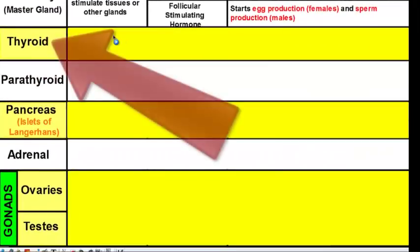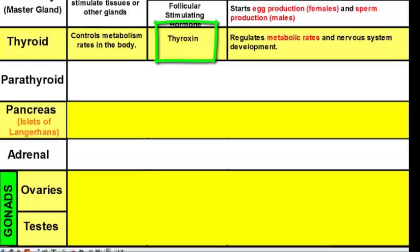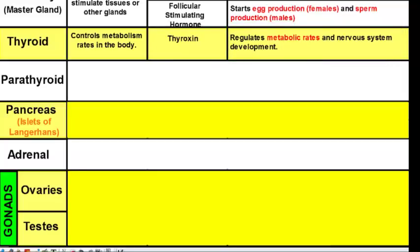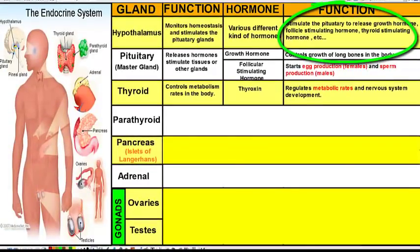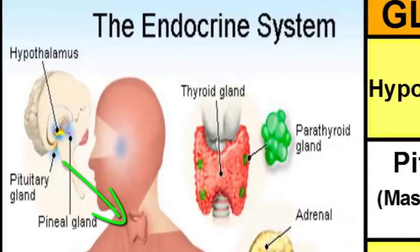The thyroid gland controls the metabolism rates in your body — how fast or slow the chemical reactions in your body go. Some people have faster metabolisms and others have slower ones. The hormone that controls the rate of metabolism is called thyroxin, which regulates metabolic rates and nervous system development. The pituitary gland stimulates the thyroid by releasing thyroid-stimulating hormone, which activates the thyroid to produce thyroxin to control your metabolic rate.